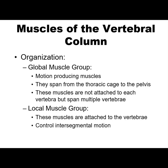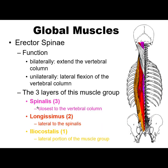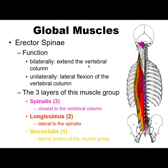Let's look at these global muscle groups. It is called the erector spinae, and you can palpate it down near your lumbar spine region. Some people, like power lifters, have very pronounced erector spinae. Their function: bilaterally, they extend the vertebral column; unilaterally, they contribute to lateral flexion.